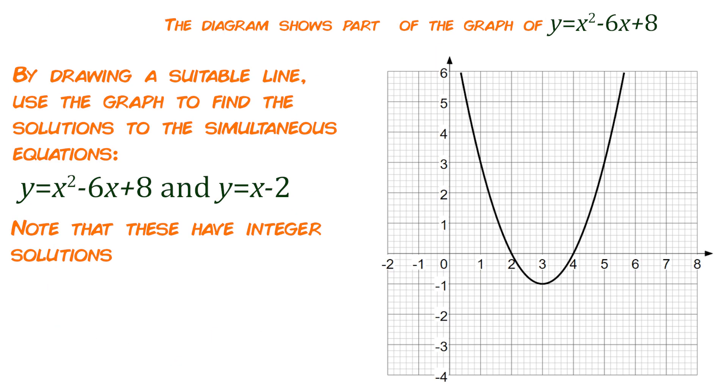The diagram shows part of the graph of y equals x squared minus 6x add 8 and then by drawing a suitable line use the graph to find the solutions to the simultaneous equations y equals x squared minus 6x add 8 which we've been given already and then y equals x minus 2. So all I have to do is to draw on the line of y equals x minus 2.